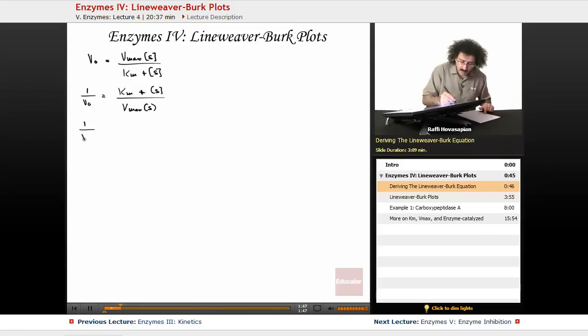You end up with 1 over V0 equals Km over Vmax times S plus S over Vmax times S. These S's cancel. Let me rearrange this. This term right here is the same as Km over Vmax times 1 over S.